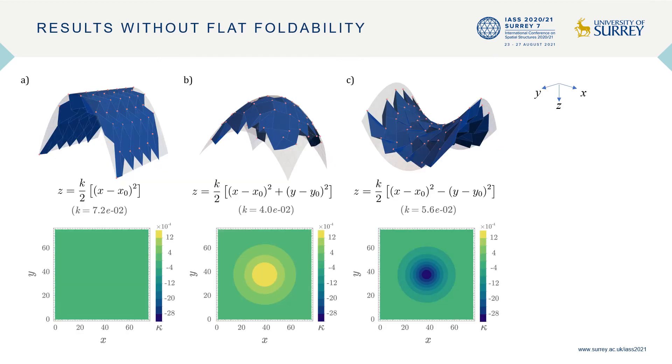We first solve the necessary equations without including the flat foldability conditions. Here, you can see the solutions obtained in the top row and the contours of the Gaussian curvatures of the target surfaces in the bottom row. We have considered three different target surfaces with zero, positive and negative Gaussian curvatures.